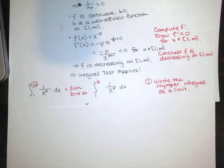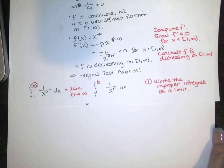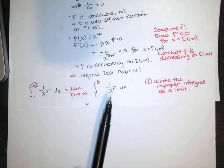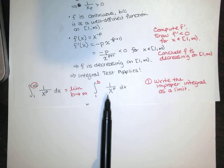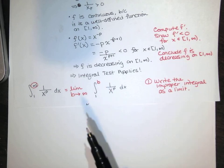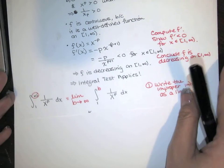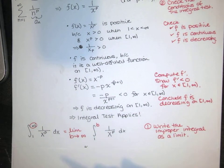Now that we've written it as a limit, we evaluate the proper integral. The antiderivative rules are not all the same: if p equals 1, this is 1 over x and we get natural log of the absolute value of x. But if p is not equal to 1, we rewrite as x to the negative p and use the power rule. So there are two cases: p equals 1, and p not equal to 1. Since we've restricted to p greater than 0, let's do p not equal to 1 first.